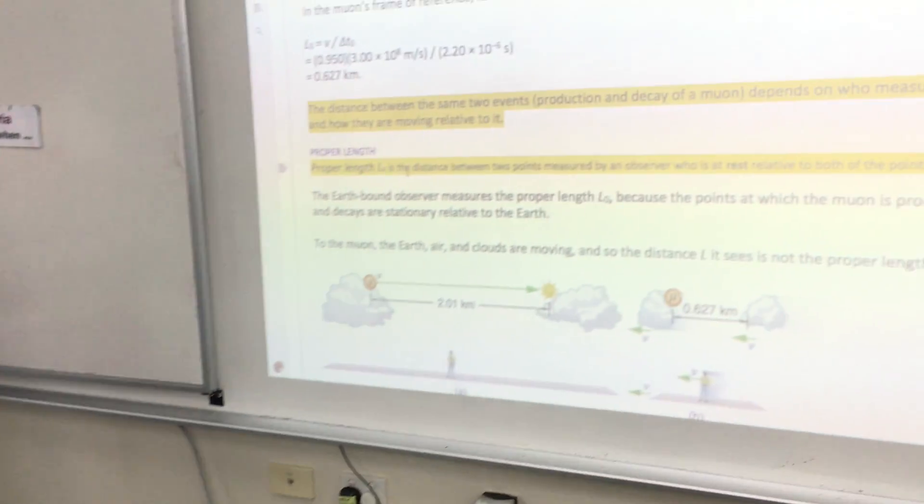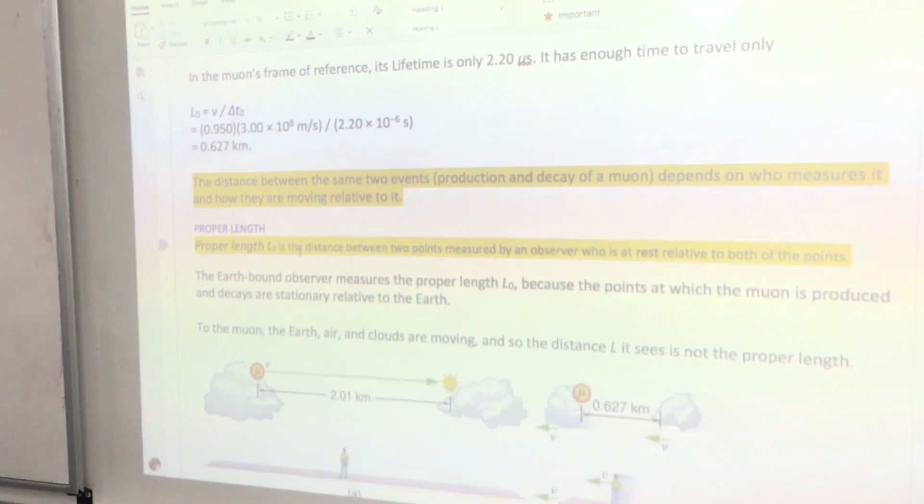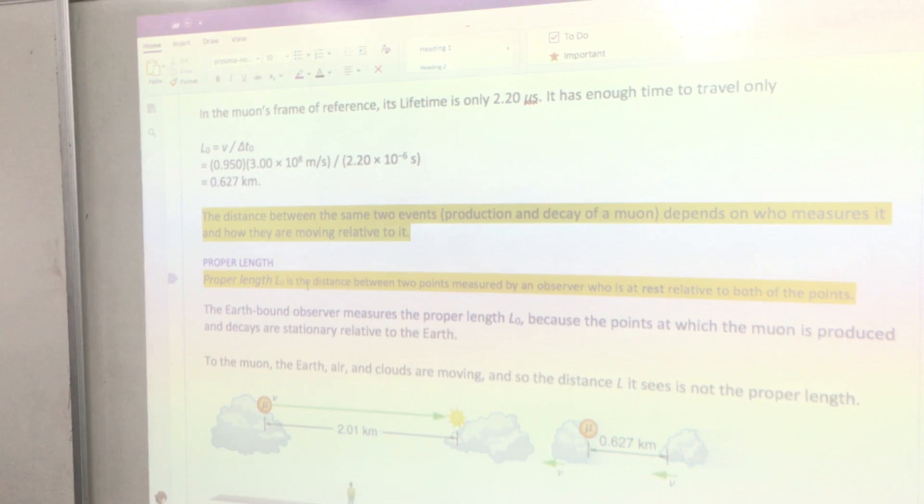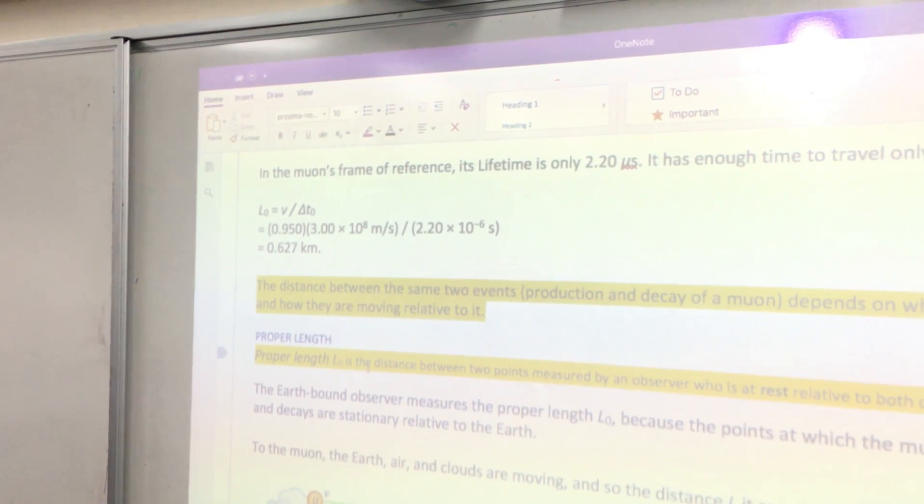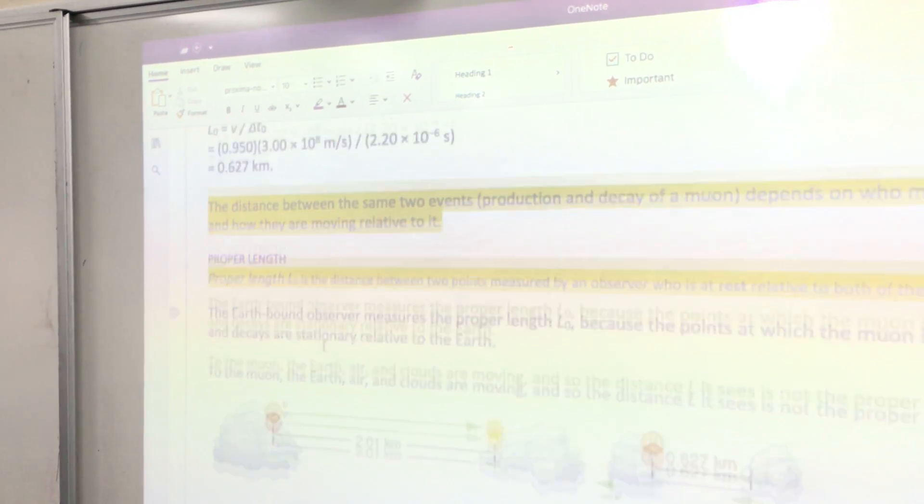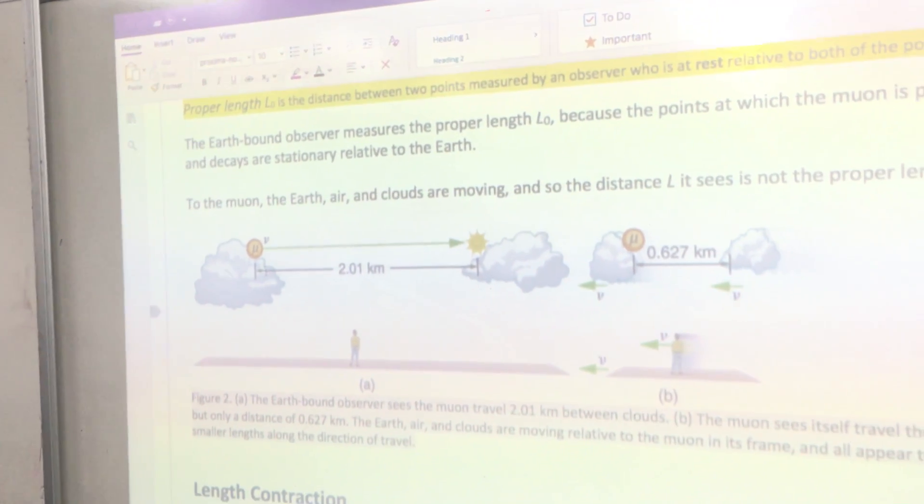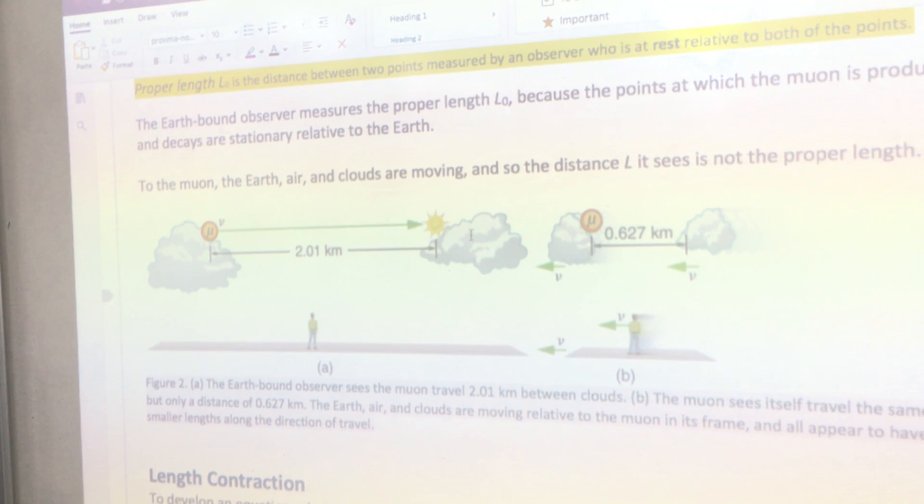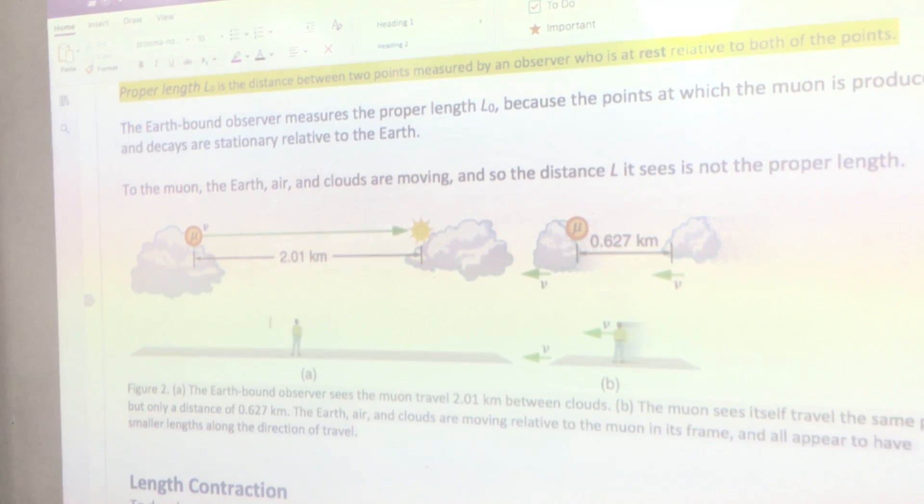So the Earthbound observer measures the proper length, L0, because the points at which the muon is produced and decays are stationary relative to the Earth. So when you do that, the diagram there is trying to show you that that distance there, the 2.01 kilometres, is what you measure and see from the Earth.